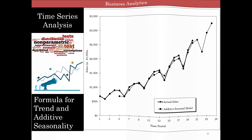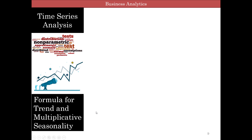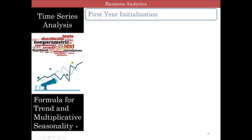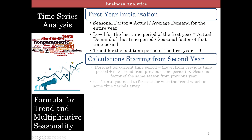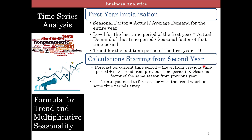Now let's go to the next part — the formulas for multiplicative trend and multiplicative seasonality. Instead of subtracting, you're now dividing. There's a division sign, and I'll show you in Excel. Don't forget to put the brackets. A lot of you just say level plus trend multiplied by season without the brackets — you need the brackets.